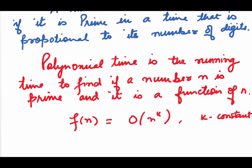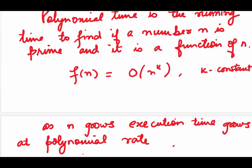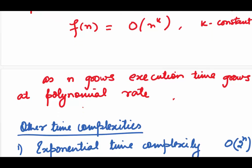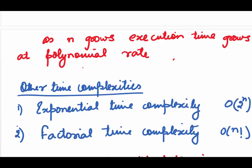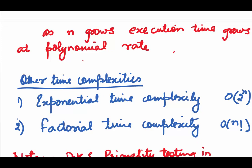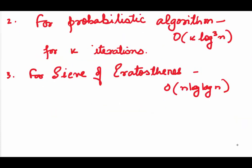Now, AKS showed that numbers can be tested for primality in polynomial time. As n grows, the execution time also grows at polynomial rate. There are other time complexities also: exponential time complexity, which is of the order 2 to the power n; factorial time complexity, which is order n factorial. Few things to note: The AKS primality testing in polynomial time is of the order log n to the power 7.5. For probabilistic algorithm as given by Miller and Rabin, for k iterations, it is of order k log n to the power 3. It was further reduced by Harvey and others. And for sieve of Eratosthenes, it is of order n log log n.